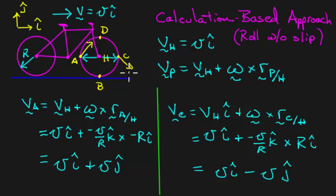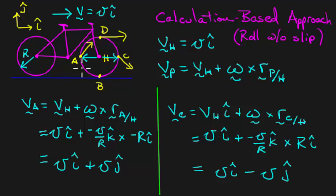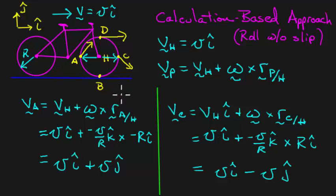So there are all four velocities. The velocity of B is zero; the velocity of D is twice the speed of the bike in the positive i-hat direction. Points A and C have velocities at 45-degree angles. Look at those directions — they're rather interesting. In the next video, we'll give a more intuitive explanation of why those velocities are the way they are.